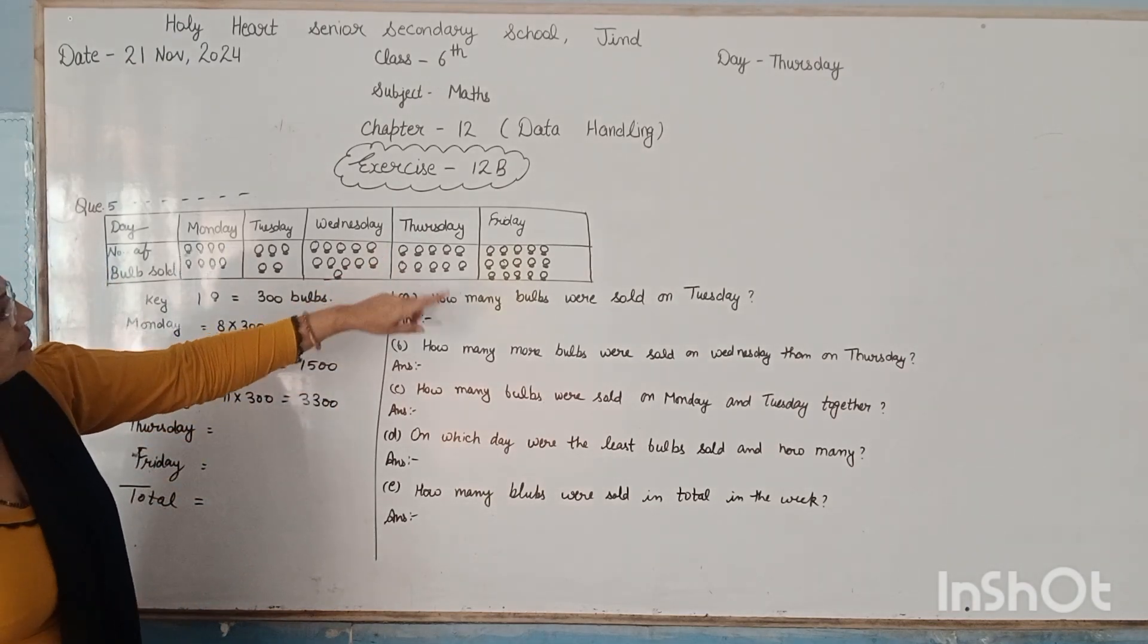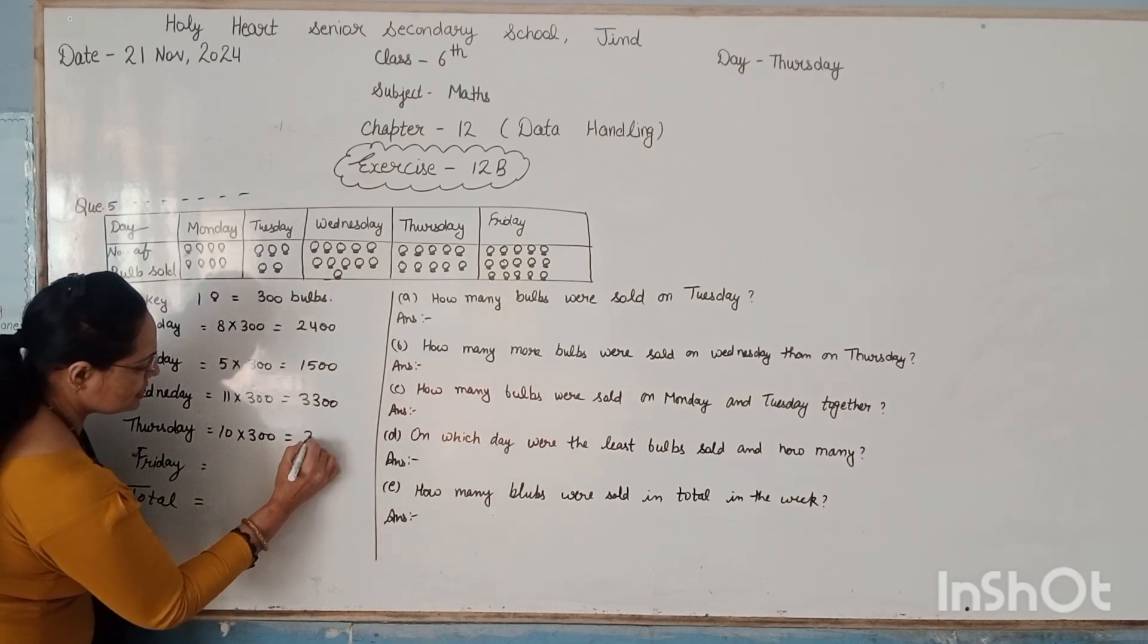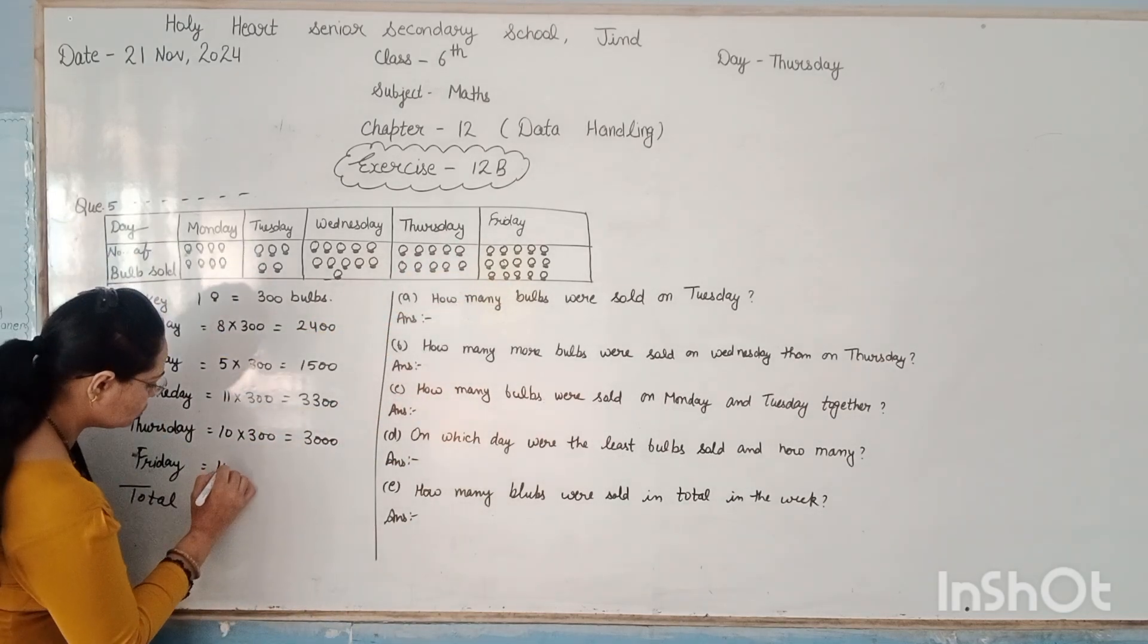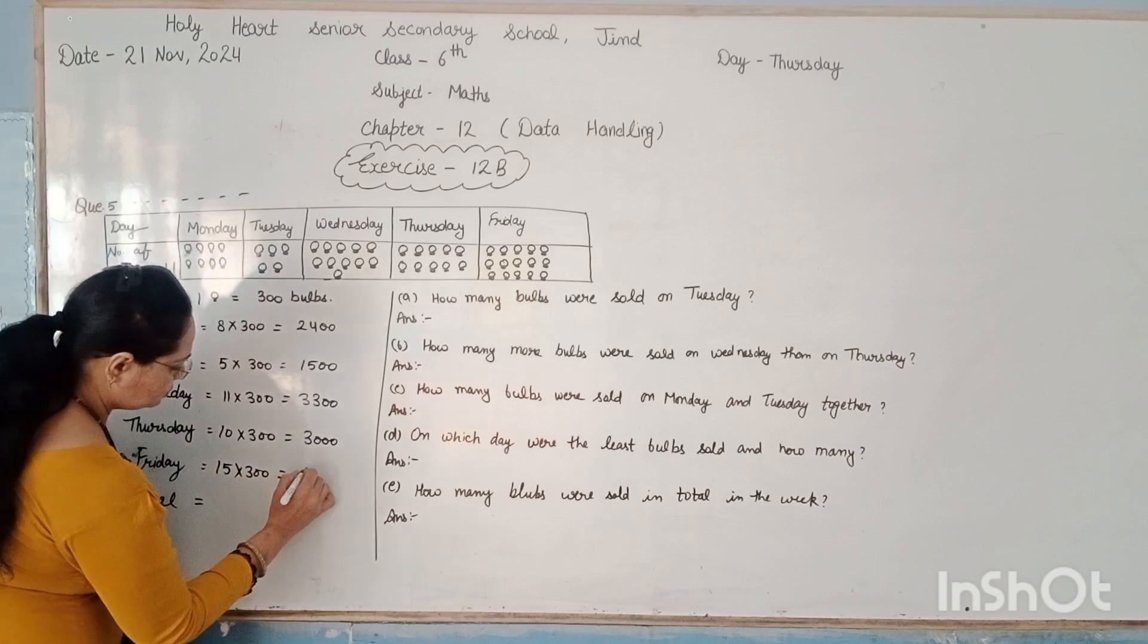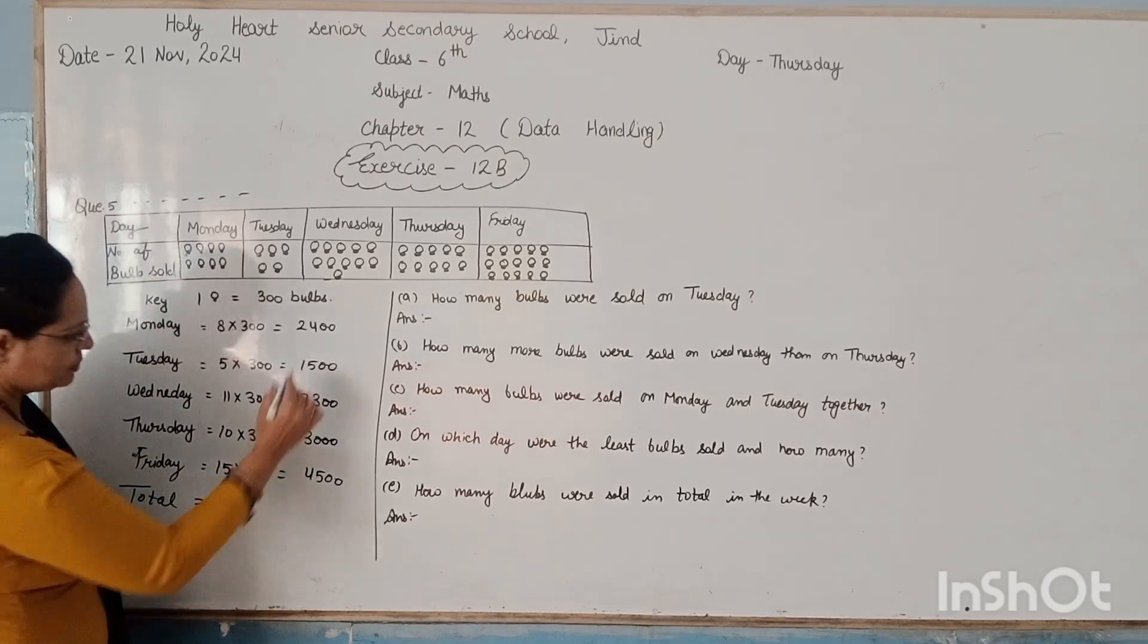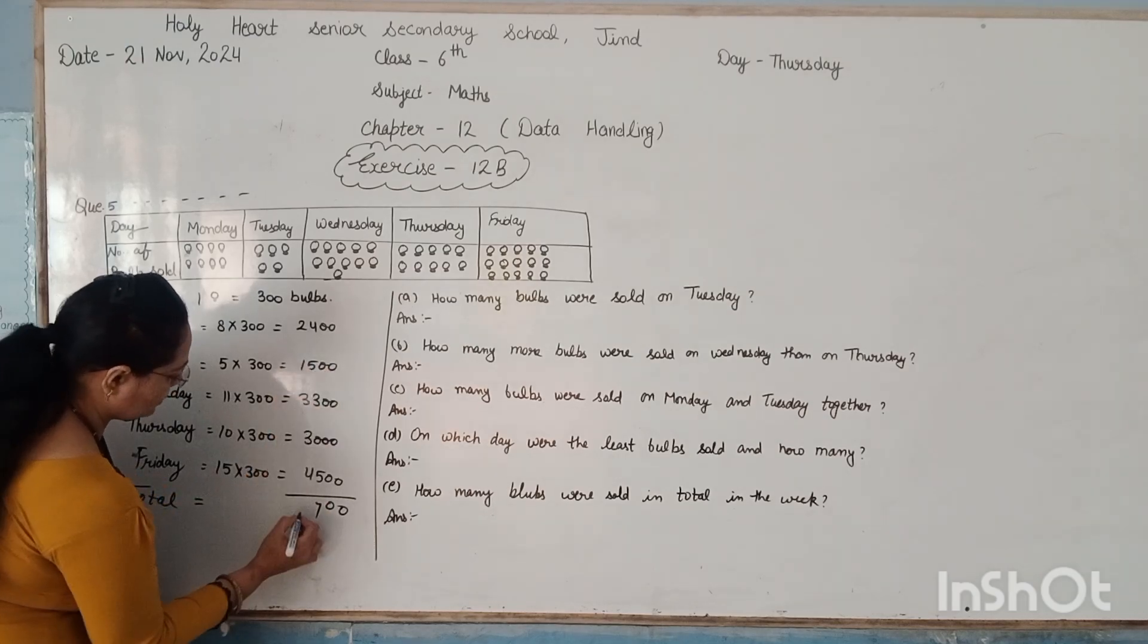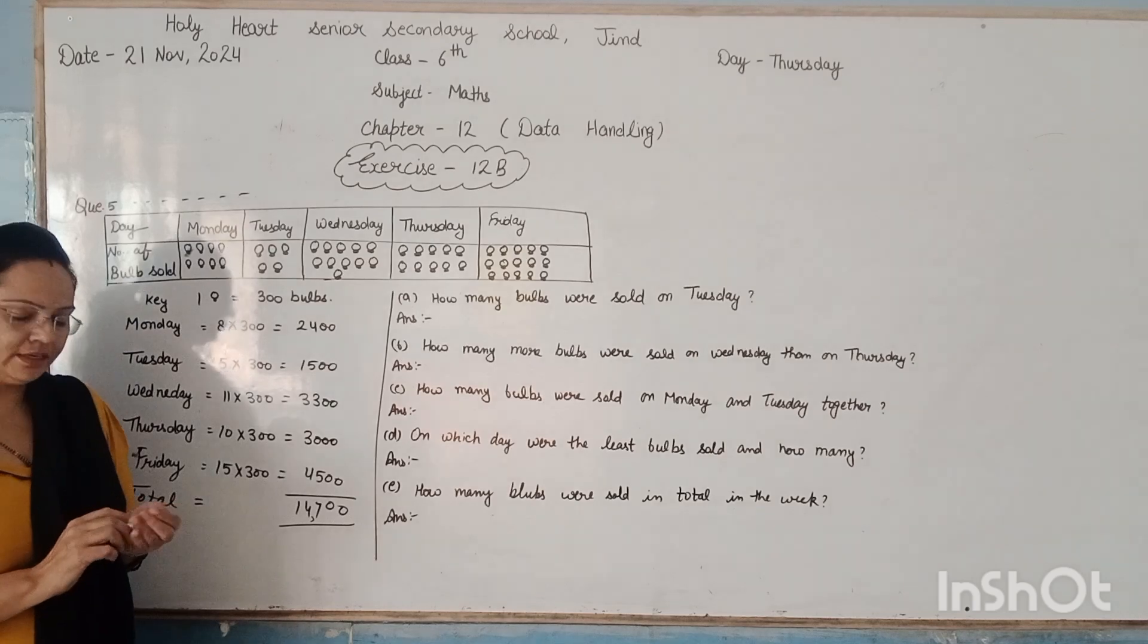After that, on Thursday, there are 10 symbols, so we multiply this with 300, these are 3,000 bulbs. On Friday, there are 15 symbols, so 15 multiplied with 300, these are equal to 4,500. So at last, we have to put total here, and the sum of these is 14,700. So total bulbs are here 14,700.